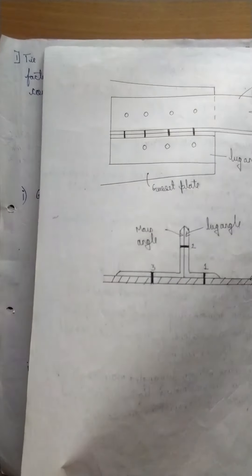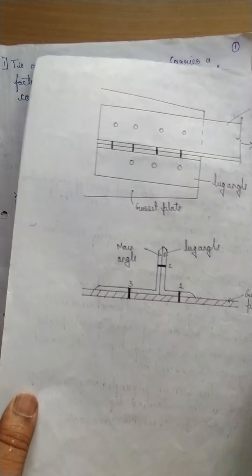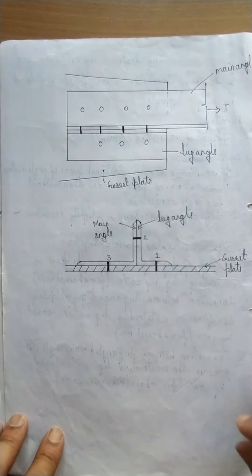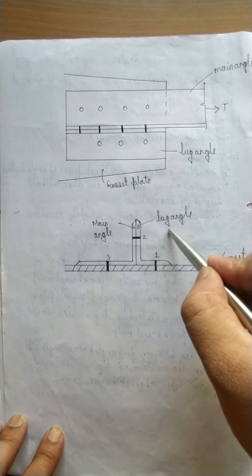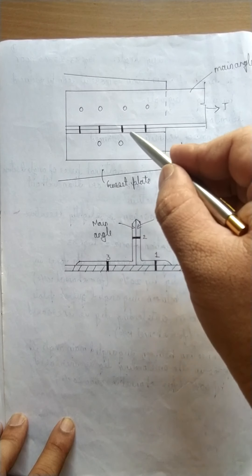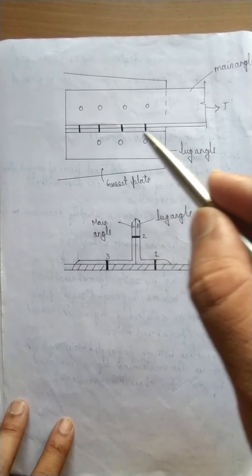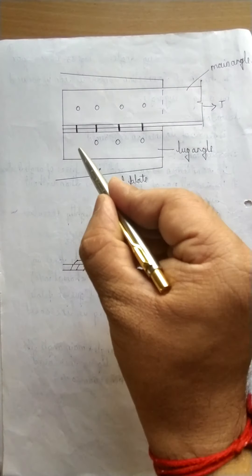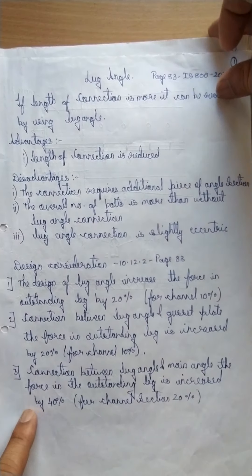Let me explain with a diagram. This is a normal connection — a gusset plate with the main angle. To reduce the number of bolts and to reduce the length of the main angle, we provide an extra angle below the main angle, called a lug angle. You can see in the cross section and elevation: the main angle has a greater length, so the lug angle is provided just below it to support the main angle.